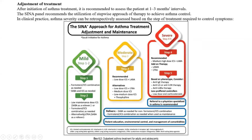The leukotriene receptor antagonist like montelukast is given for patients who are reluctant to use inhaled corticosteroids or continue to have side effects from them. However, montelukast is less effective than low-dose inhaled corticosteroids in achieving asthma control and reducing the risk of attacks. As a doctor, you will weigh which option outweighs the other.